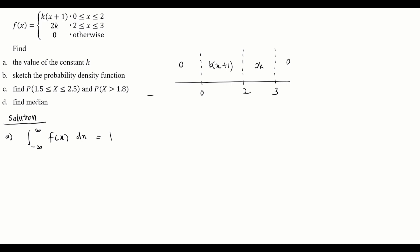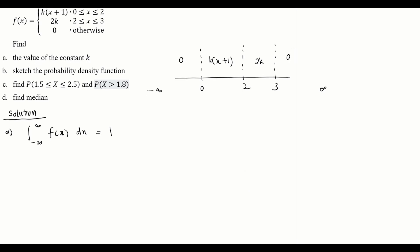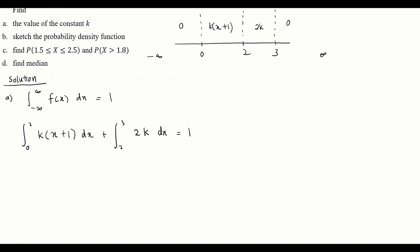From the number line, between negative infinity and 0, and between 3 and infinity, the function is 0, so those integrals vanish. We only need to integrate from 0 to 2 with function k(x+1), plus from 2 to 3 with function 2k, and set the total equal to 1.